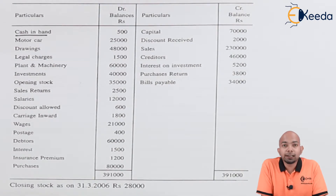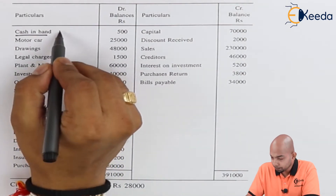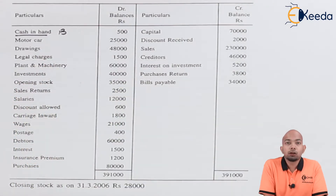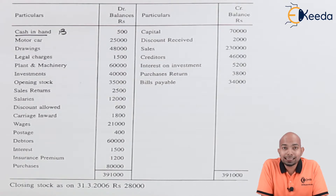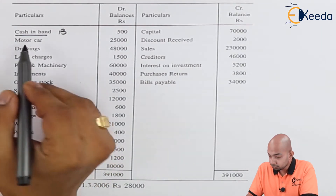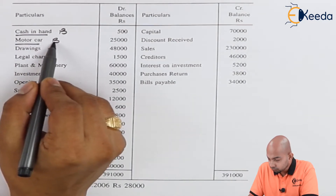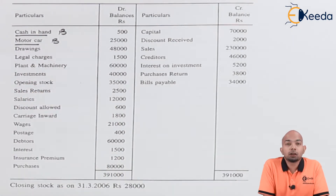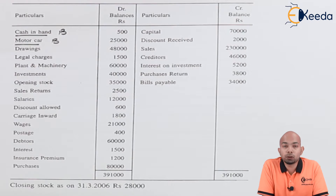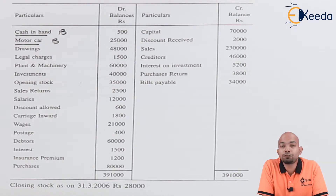Cash in hand is a part of the balance sheet, hence it will be termed as B. Motor car again is an asset, hence it will be a balance sheet item. Drawings is a withdrawal of a specific amount done by the owner, so it will be subtracted from the capital amount — hence it forms a part of the balance sheet liability side.